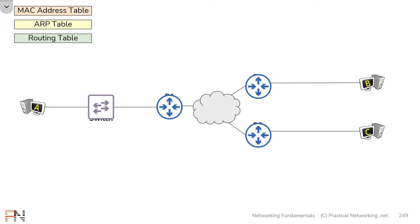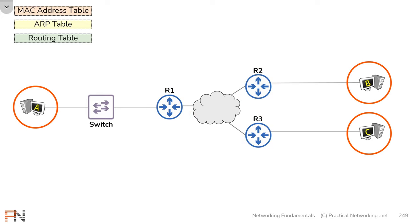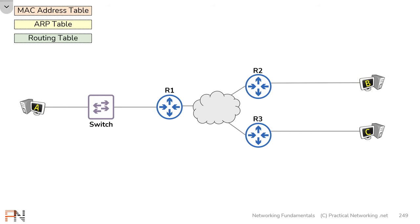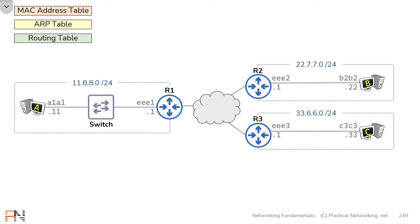We're going to show you everything that happens with these three tables as data flows through this network topology. This topology has three routers — routers one, two, and three — and three hosts: host A, B, and C. Each host exists within a network, and all the devices have IP addresses in their respective networks. Each of these wires are connected to NICs, and each of those NICs have unique MAC addresses. I'm only showing you the first four digits of MAC addresses to keep things simple.